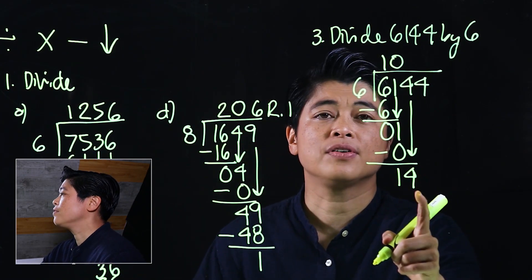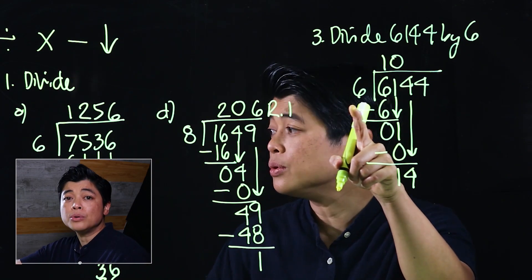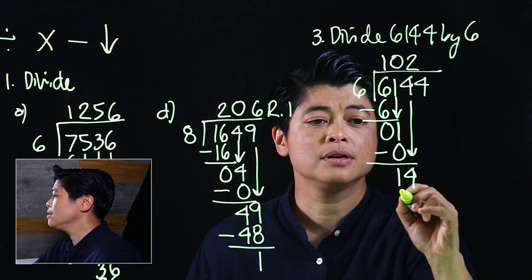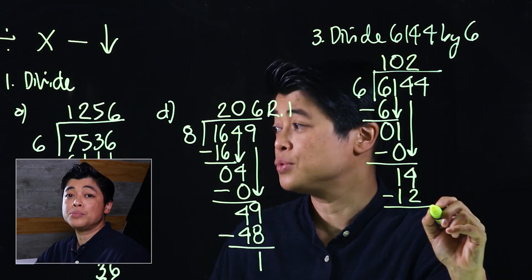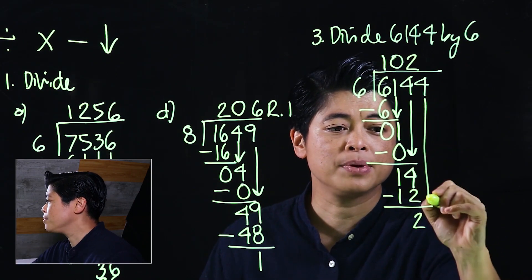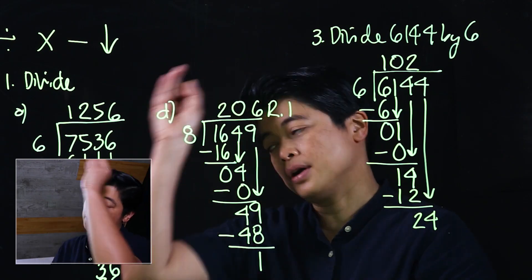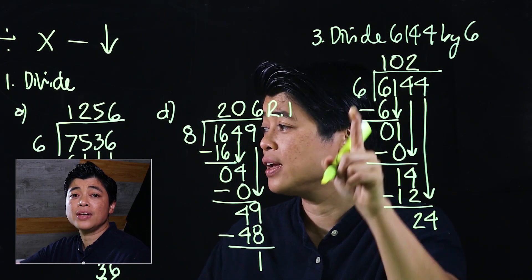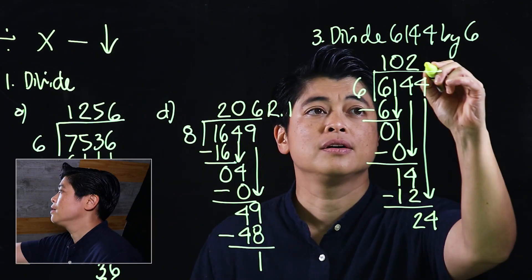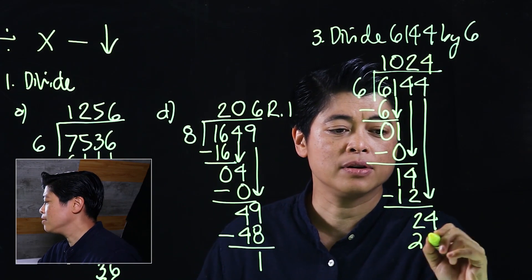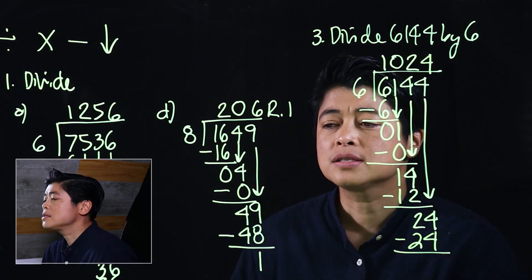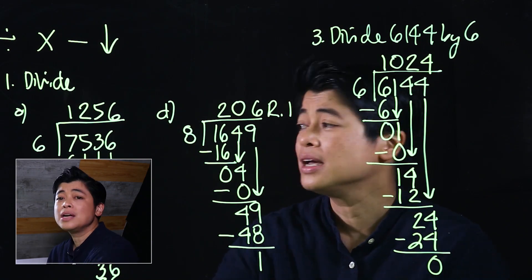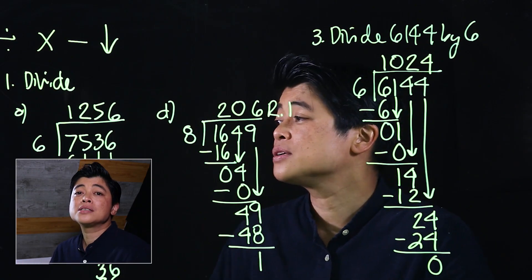Divide 14 by 6: counting 6, 12 — that's 2 without going over. So 2, multiply gives 12, subtract gives 2, then bring down. The process repeats: 24 divided by 6 is 4 — counting 6, 12, 18, 24. Multiply gives 24, subtract gives 0. We can leave it blank or write a zero — either way they are the same.